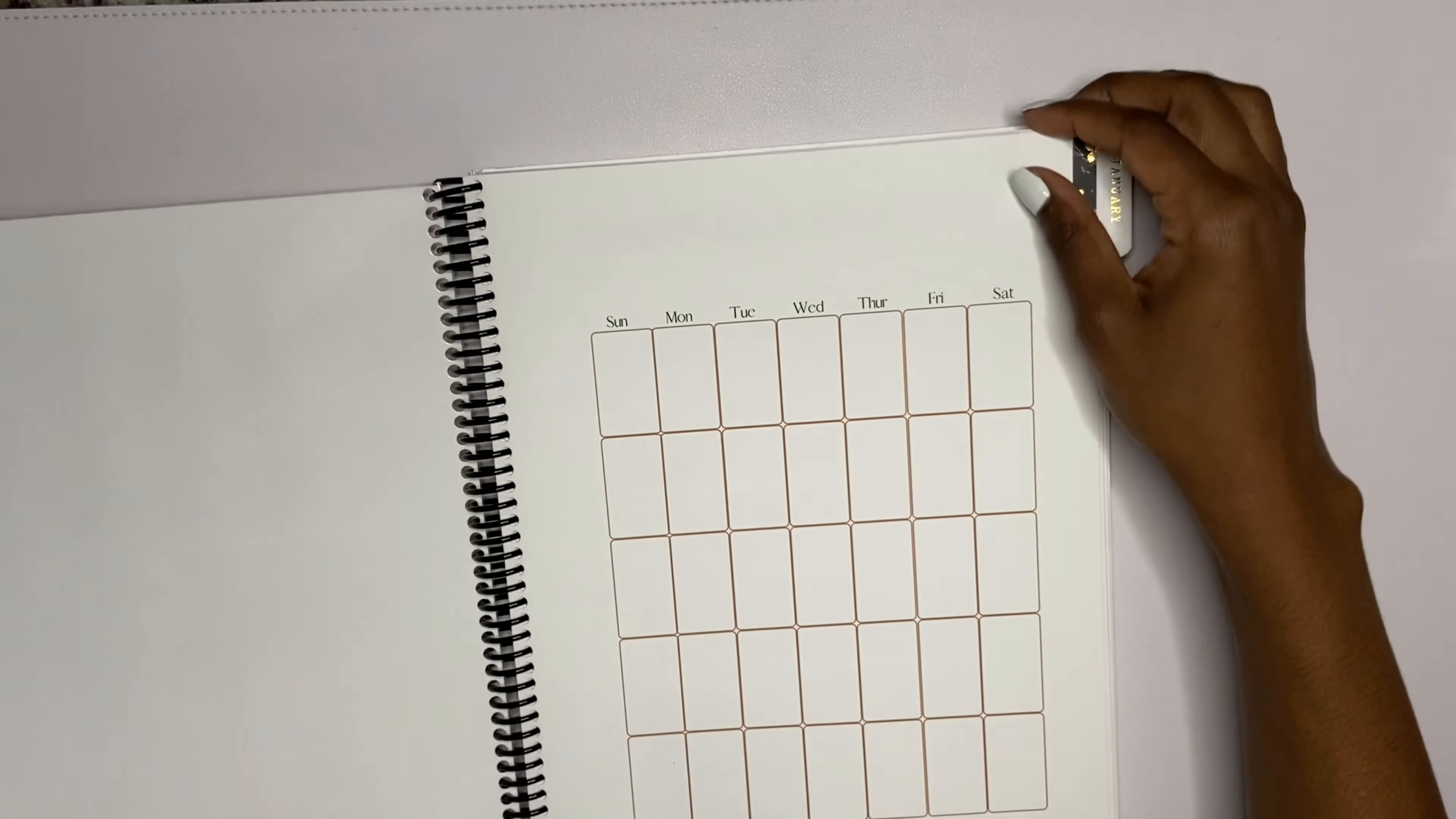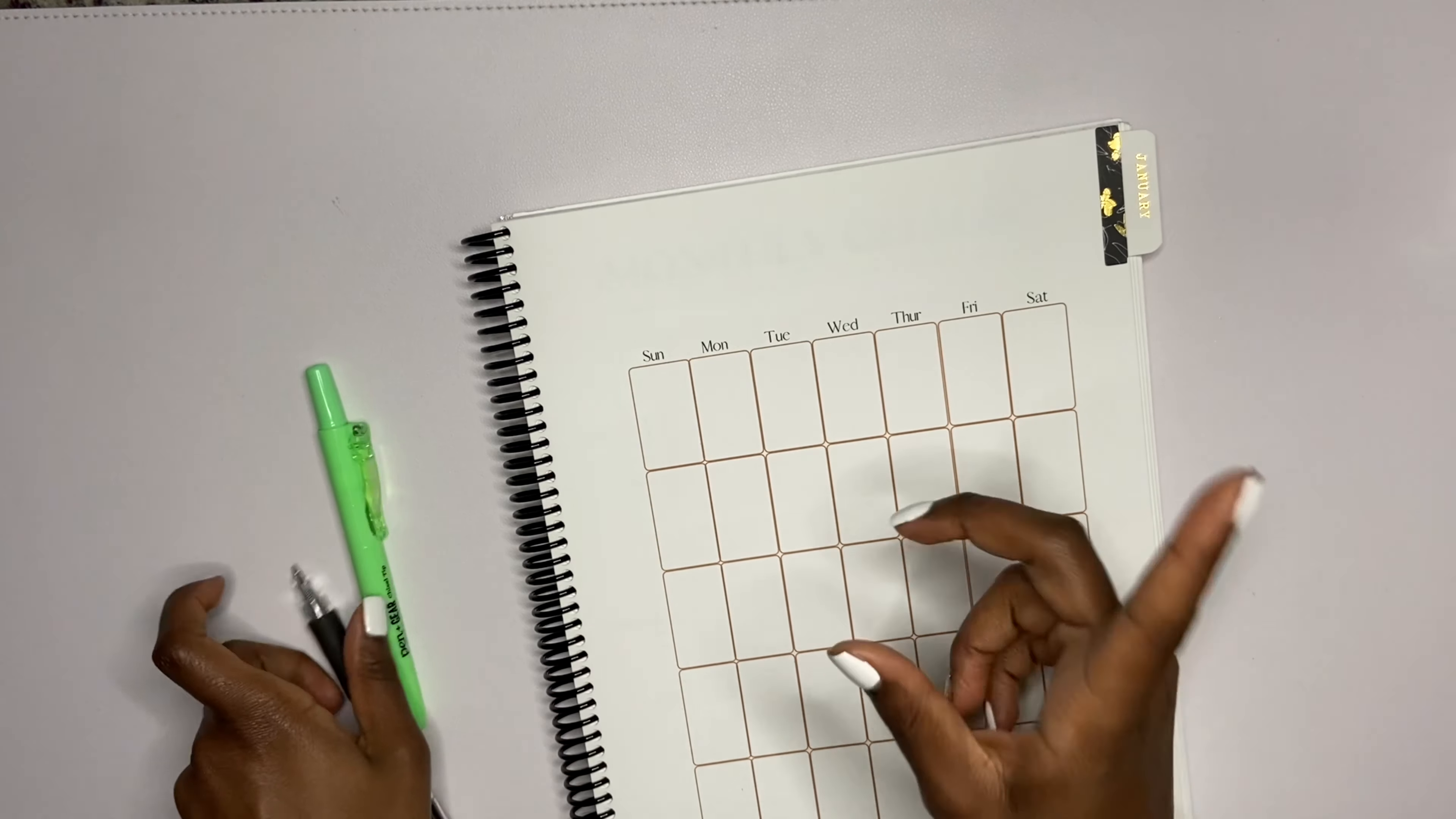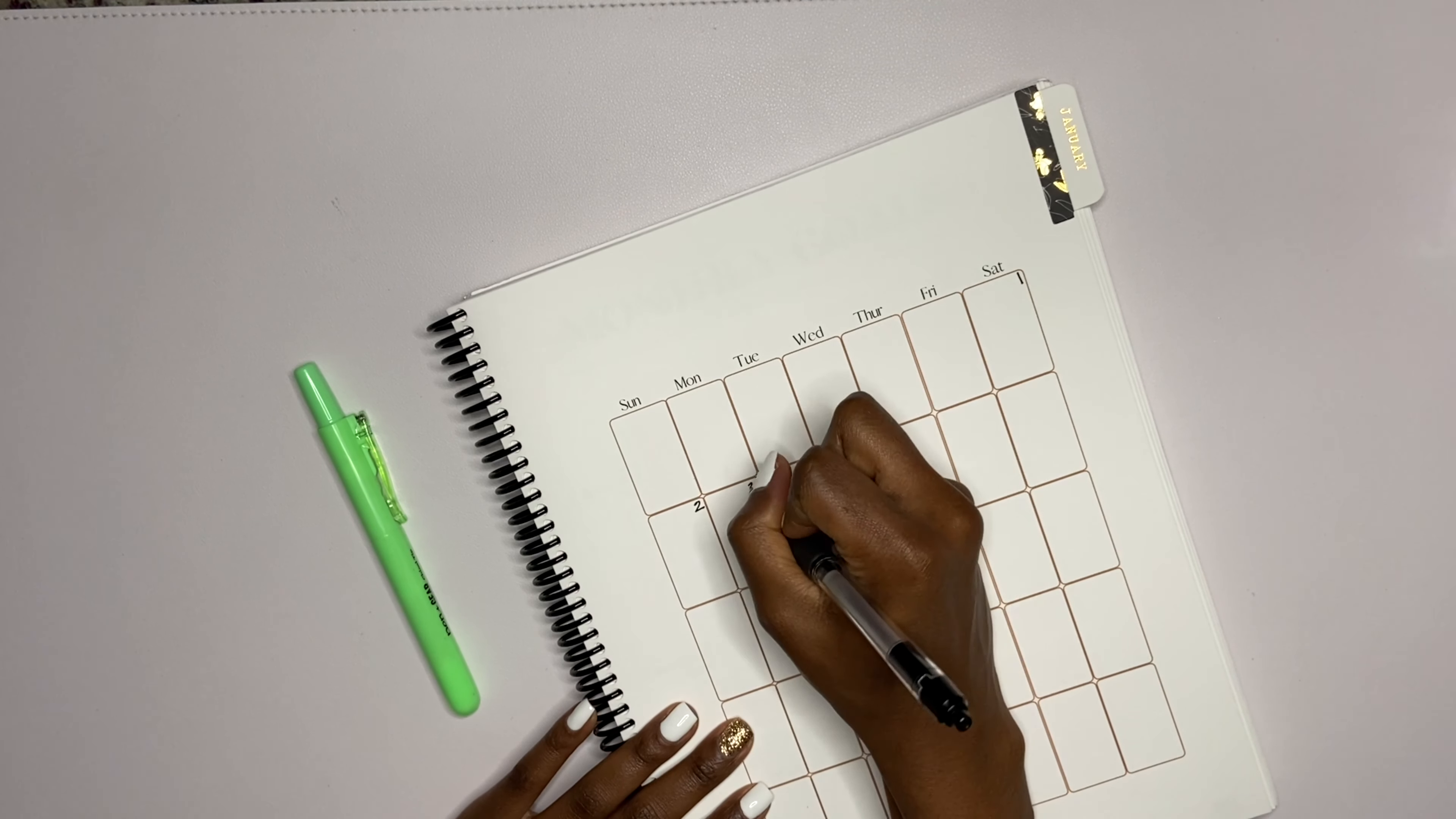Okay, so first things first. When you open the Paper by Mo budget planner - if you have one, thank you for supporting. If you don't, I have 15% off on paperbymo.com and the 2022 challenge planners are also on sale. Shameless plug! So first things first, we can write in these numbers for the month. I'm gonna write in my numbers - the first was on Saturday, then second, third.